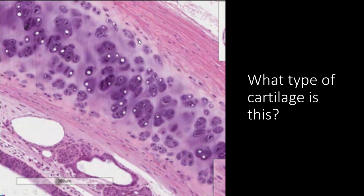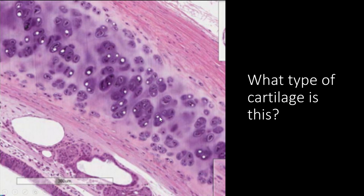What type of cartilage is this? This is hyaline cartilage — that characteristic purple-y color, with little lacunae containing chondrocytes (cartilage cells). Hyaline cartilage is found in your trachea, nose, and on the ends of your bones forming joints. Importantly, hyaline cartilage provides the embryonic blueprint for your bones — as a fetus, hyaline cartilage is laid down as a blueprint, then replaced by bone. The hyaline cartilage remaining on bone ends forms your joints.